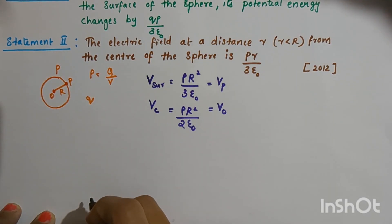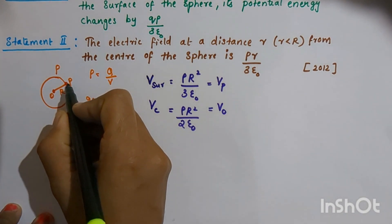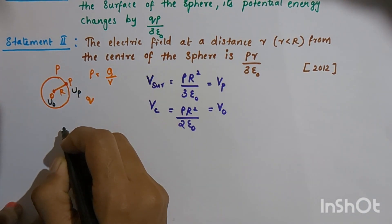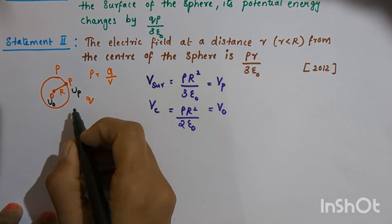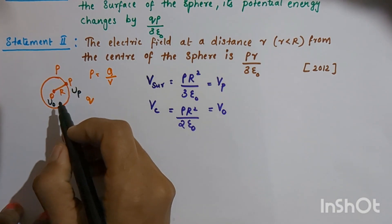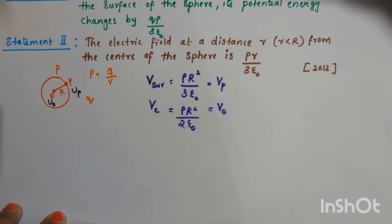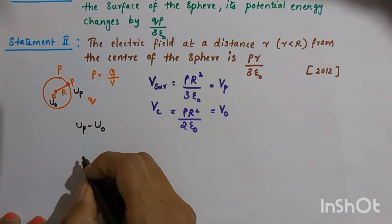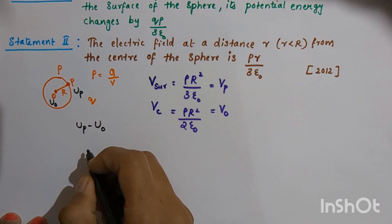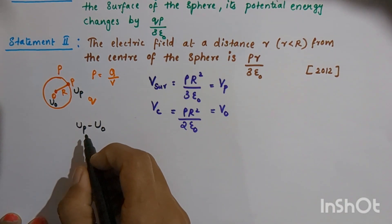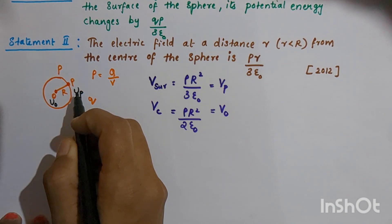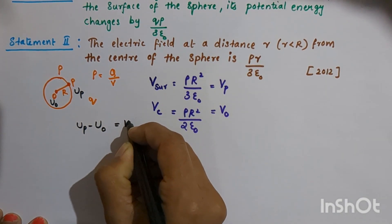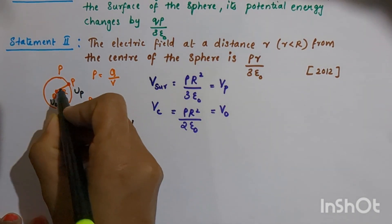Taking the potential energy at P as U_P and the potential energy at the centre point O as U_O, the change in potential energy is U_P minus U_O. This change in potential energy is actually equal to the work done to move the charge from point O to point P.